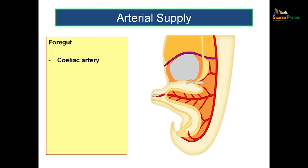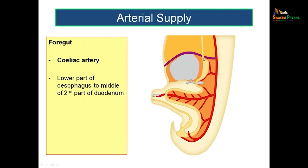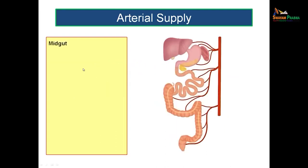The major branches to all these guts are coming from the abdominal aorta. The first artery is the celiac artery, which supplies the lower part of the esophagus up to the middle of the second part of the duodenum — that is the limit of the foregut. Starting from the lower part of the esophagus, the entire stomach, the first part of duodenum, and the second part up to the opening of the major duodenal papilla receive blood supply from the celiac artery. The midgut receives blood supply from the superior mesenteric artery.